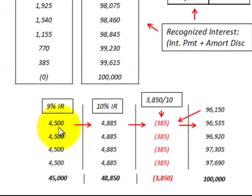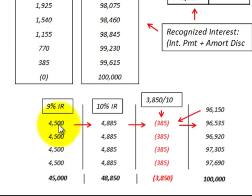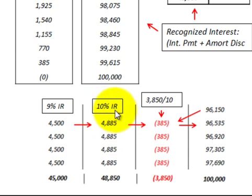First, we have a $4,500 interest payment paid to bond holders each period. That's based on a 9% stated rate — or 4.5% per period — times the $100,000 face value, giving us a $4,500 payment. Next, we have the interest expense recognized for each of those payments, based on a 10% market rate of interest.